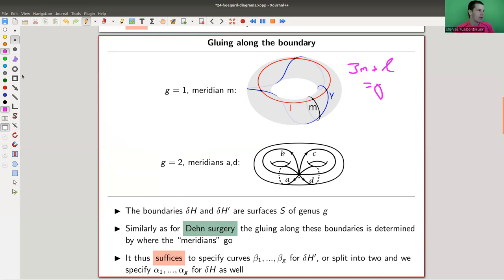So three times M plus L is gamma. And I just say my meridian is glued in this fashion to the curve gamma. And you can do the same for where the higher genus. So you would say A and D go to some sum of A, B, C, Ds, whatever it is. And that's kind of general. So you can glue them together and surfaces of genus G. And as again, as for Dehn surgery, it's really the same idea determined by the meridians. But we do something slightly different.